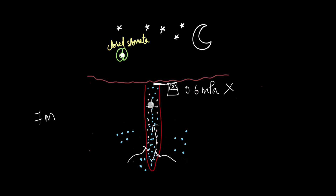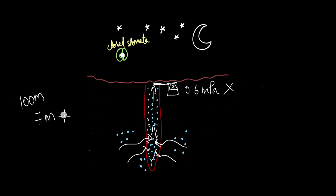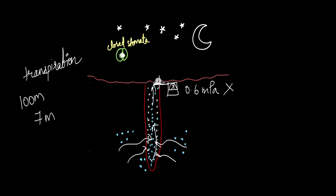Root pressure basically works by pushing water up — as more water enters the root, substances on top get pushed up to the upper parts of the plant. Some plants and trees are over 100 meters tall; for these plants, root pressure is definitely not enough to transport water and nutrients, and they rely majorly on transpiration. But small plants, trees and shrubs do use root pressure to transport nutrients, especially at night when stomata are closed and transpiration does not occur.